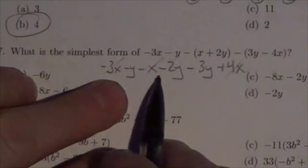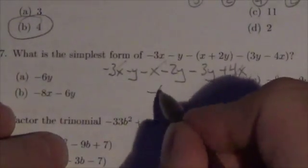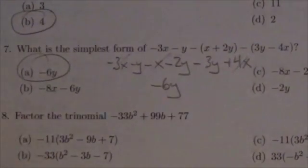Negative y, negative 2y, negative 3y is going to end up being, when you put that all together, negative 6y. And so our answer here is a.